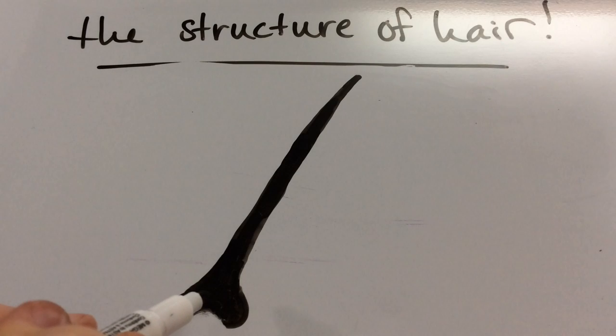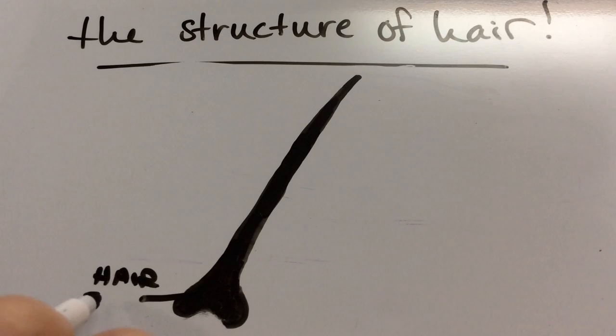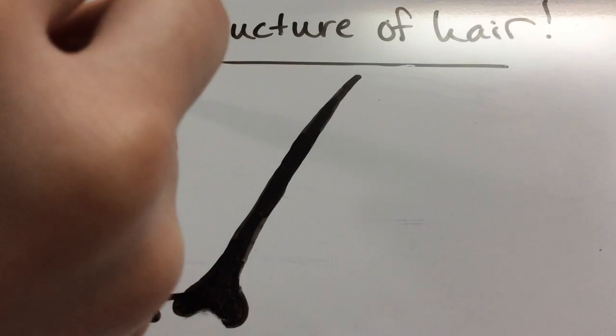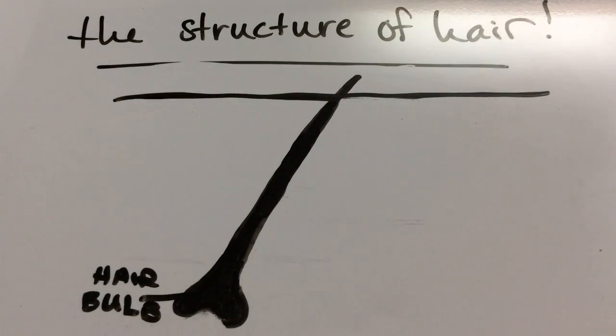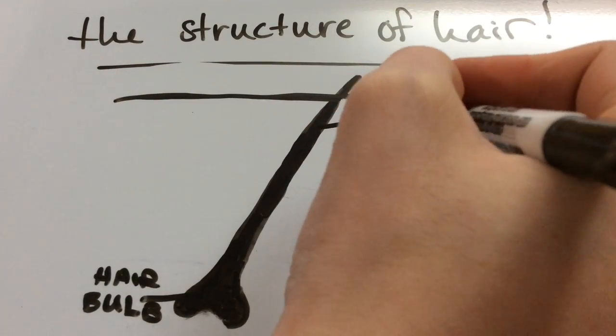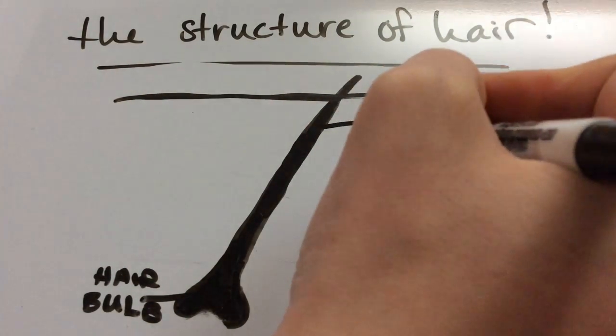Going into the actual structure of hair, the hair bulb is the lowest part of the hair strand - it's thickest and club-shaped. The hair root is below the epidermis, which is the line I just drew. The hair shaft is the part projecting above the epidermis.